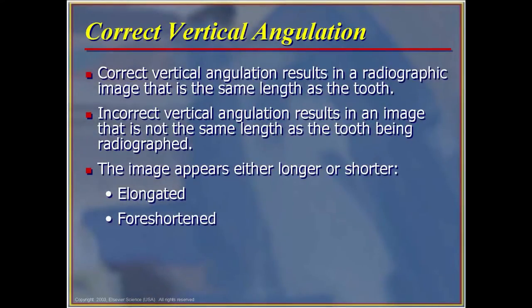Correct vertical angulation results in a radiographic image that is the same length as the tooth is in the mouth. Incorrect vertical angulation results in an image that is not the same length and can be either elongated or foreshortened.